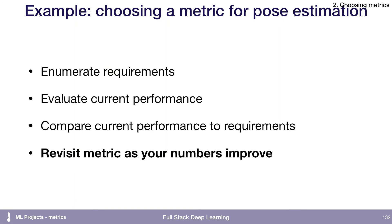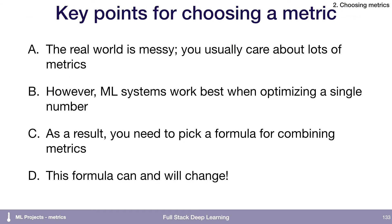The last thing I would do is revisit metrics as numbers improve. As angular error gets closer to what we need, I'd start incorporating things like inference time. To summarize: the real world is messy and you care about a lot of metrics, but you need to pick one. There are many different ways to combine metrics into a formula, and that formula will change as your project progresses.